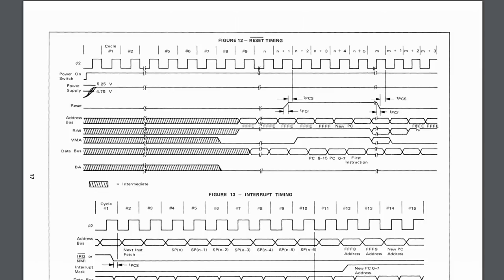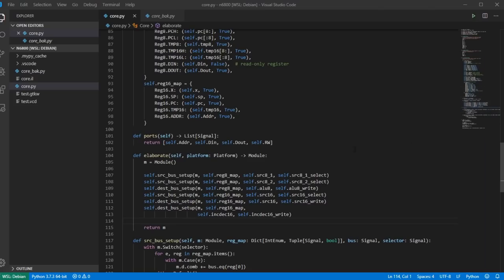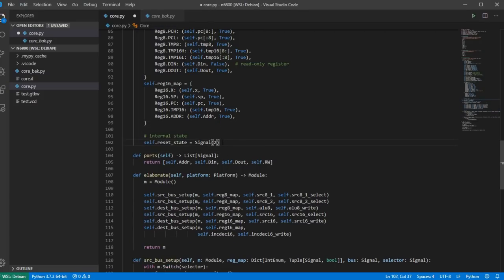We're not doing any decoding yet so nothing happens on subsequent clock phases. But the point is we've written code to simulate putting the processor in reset and verified via waveforms that it does the right thing. What we'd really want is formal verification to assert: after reset, the first address is FFFE, the second is FFFF, and whatever the memory responds with determines the next address.